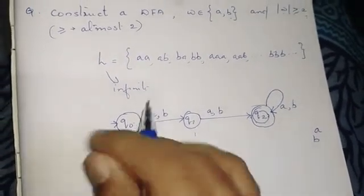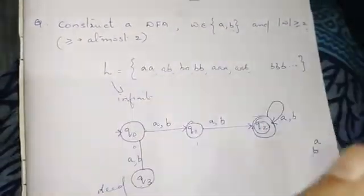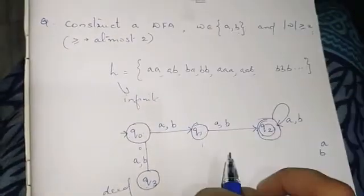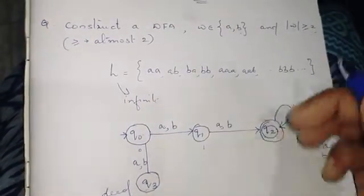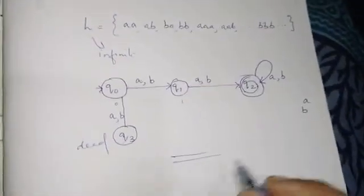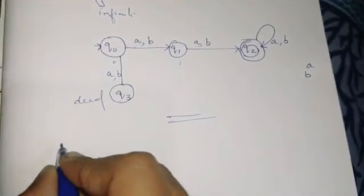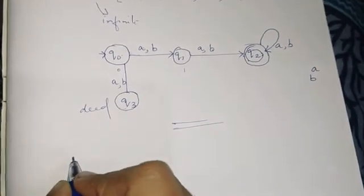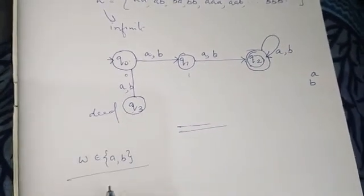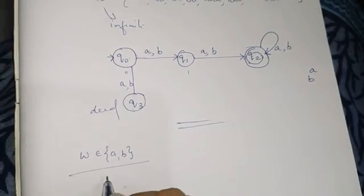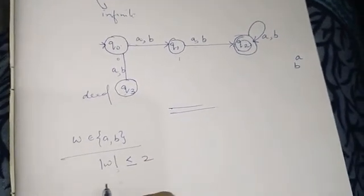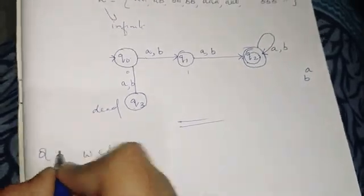This is the DFA for the language of strings over {A, B} with length greater than or equal to 2. Now the next question: set of strings over {A, B} where the length of a string is at most 2, meaning 0 to 2. This is the corresponding question.